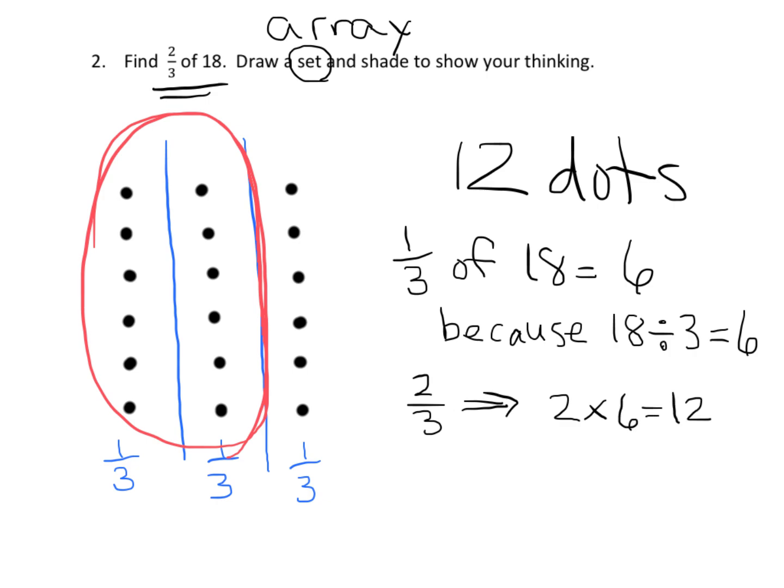This doesn't mean an equal sign. I'm saying to find 2 thirds, it means, and that arrow doesn't mean an equal sign, but it means you're going to do 2 times 6 is 12.